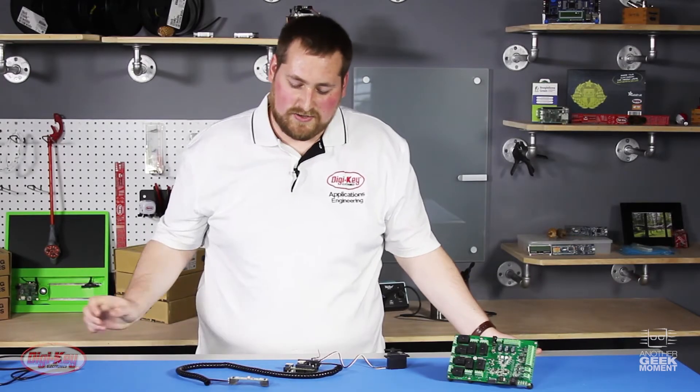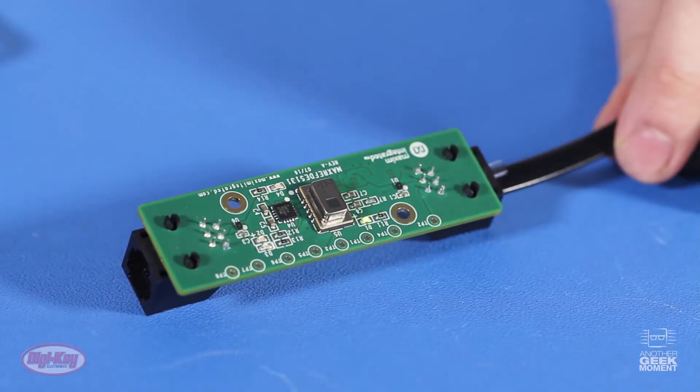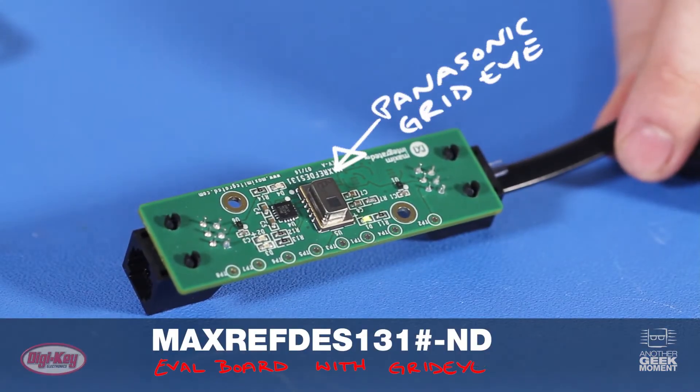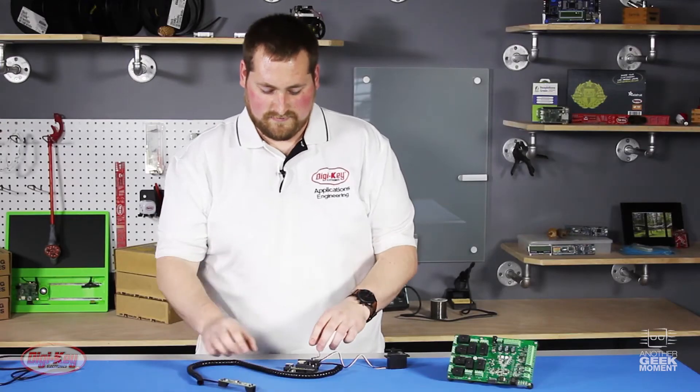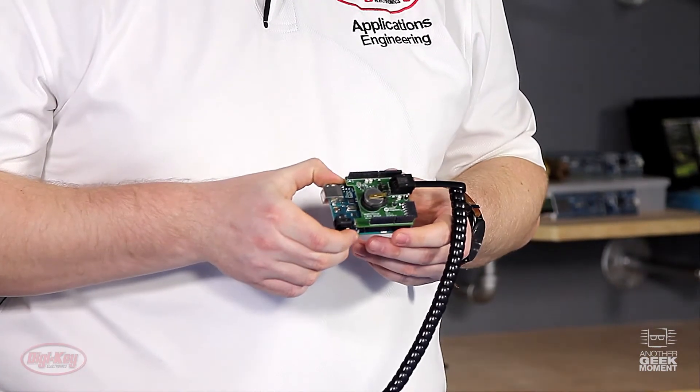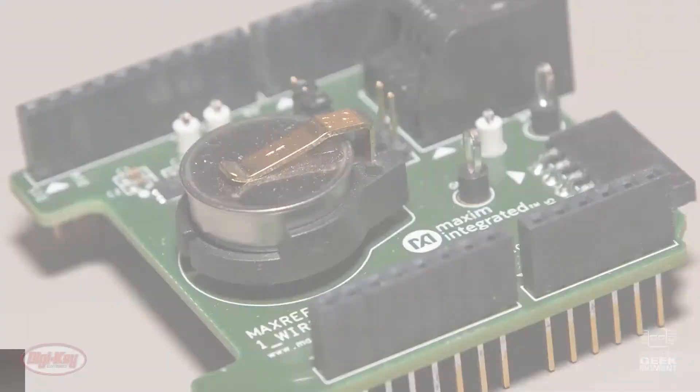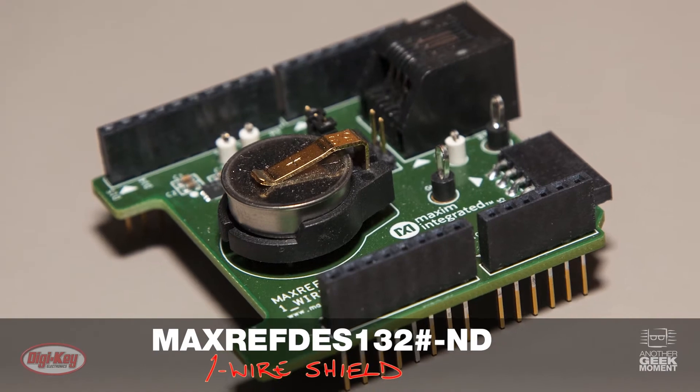For this project we'll be using Maxim's 131 eval board for the Panasonic GridEye. It's a 132 shield for Maxim microcontrollers and Arduinos and an Arduino Uno.